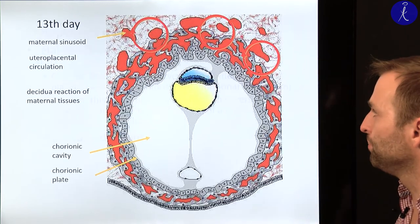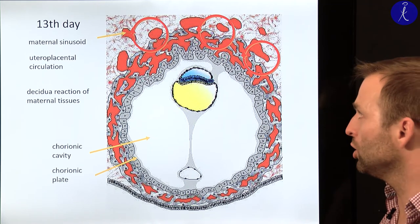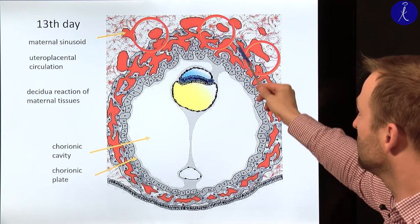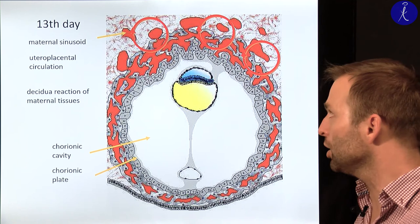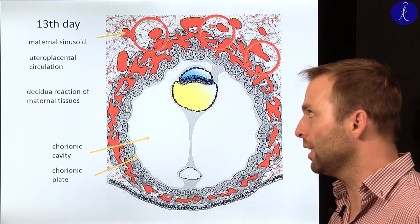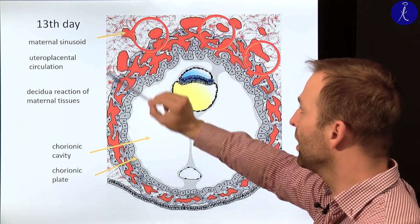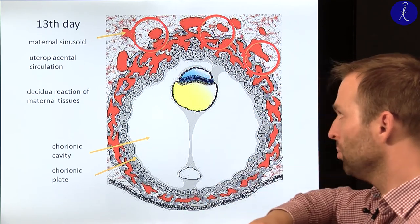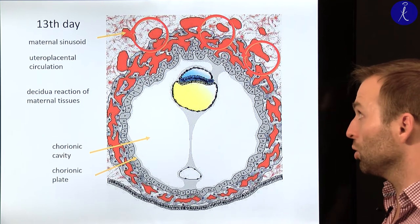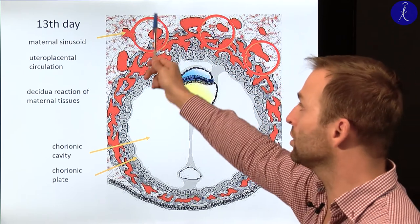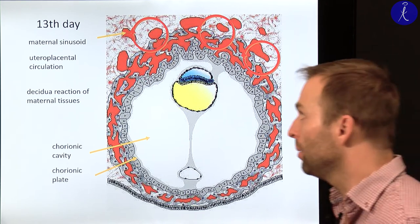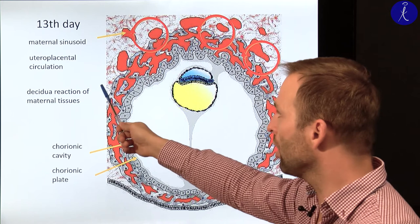Let's look at a picture showing the end of the second week — day 13. Here you have the trophoblast layers starting to break down maternal tissues, not only the endometrial cells but also the blood vessels there. These are marked as maternal sinusoids — maternal blood vessels — and blood flows into small cavities made by the syncytiotrophoblast layers. Here blood circulation will start, called uteroplacental circulation — the circulation of maternal blood into and out of the placenta.